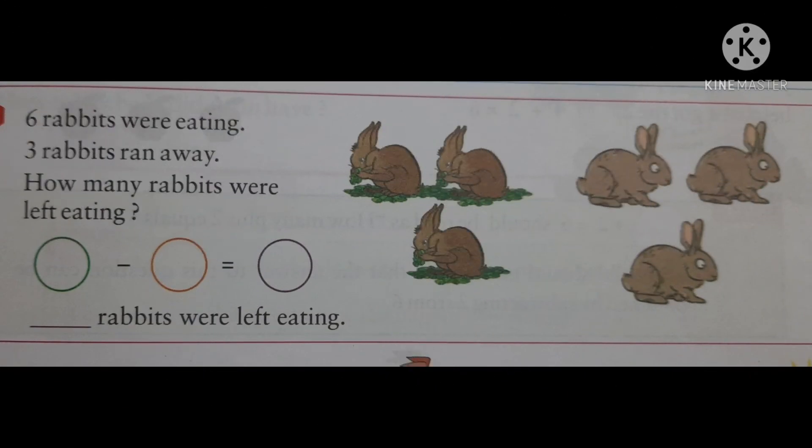6 rabbits were eating. 3 rabbits ran away. How many rabbits were left eating? So, in the circles, you have to write it properly.